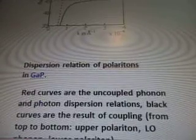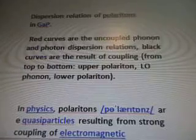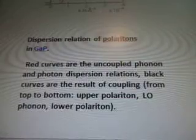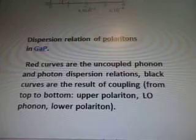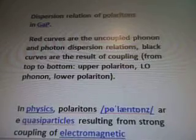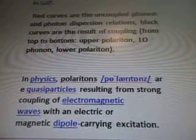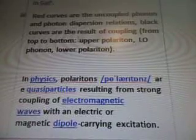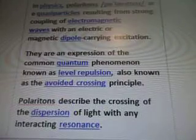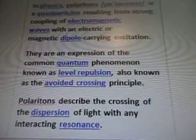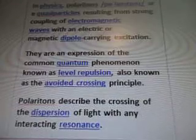Dispersion relations for polaritons in a gap. Red curves are the uncoupled phonon and photon dispersion relations, and the black curves are the result of coupling. From top to bottom: upper polariton, low phonon, and lower polariton.